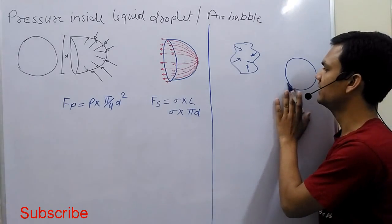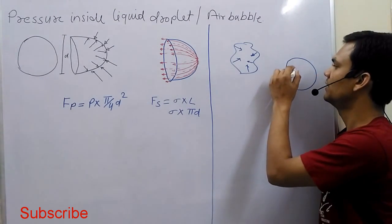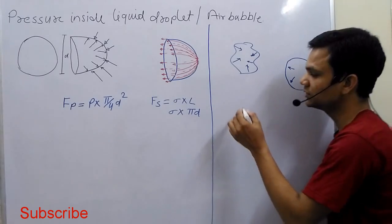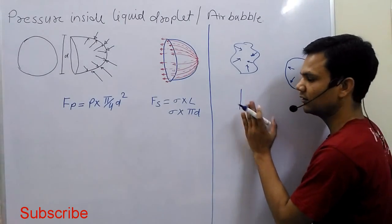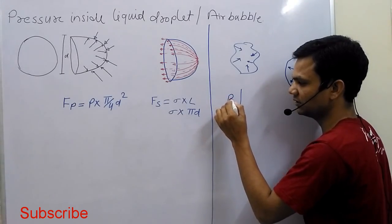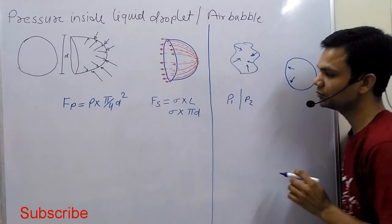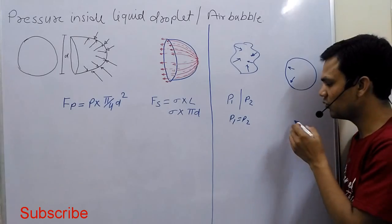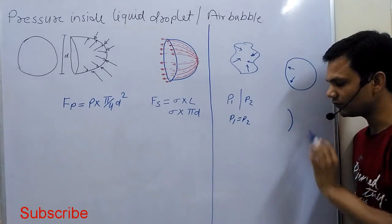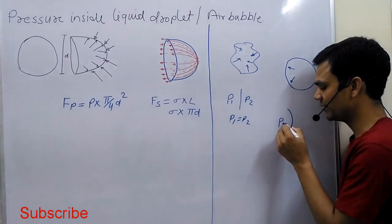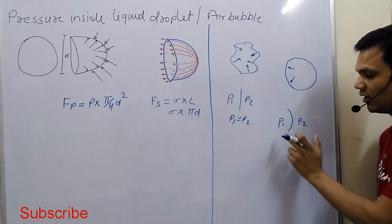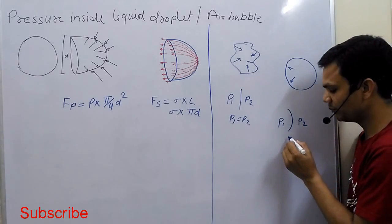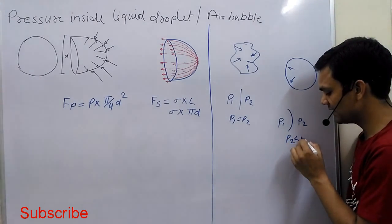Now we understand that the pressure inside a spherical shape is more, and how that is possible. Suppose we consider a cross-section area. If the lining is straight, then P1 is equal to P2. If we make a convex shape, then pressure P1 is more, so it tries to push toward the P2 side. So pressure P2 is less than P1.